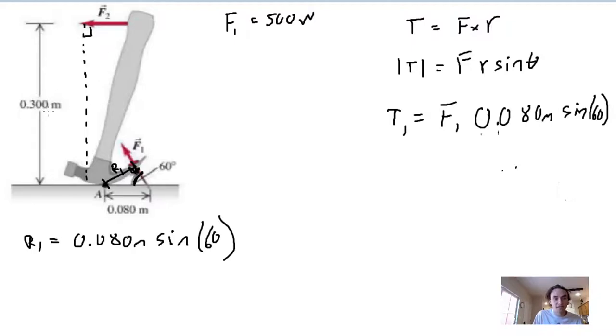We know that's this 0.300 meters, so we know that torque two is going to equal this effective radius of 0.300 meters, and that's because that's the component of the radius that's perpendicular to our force, times F2.